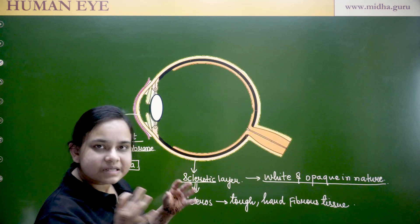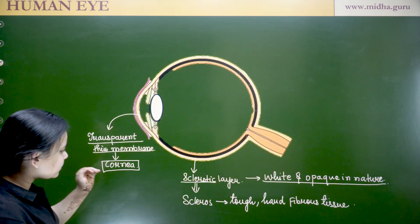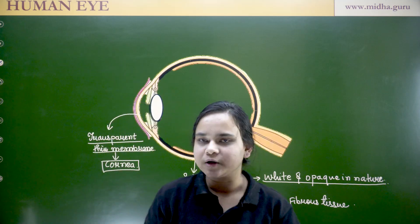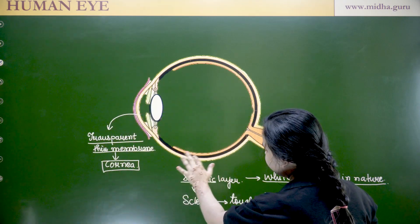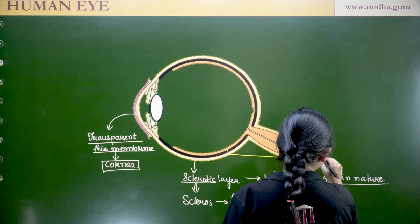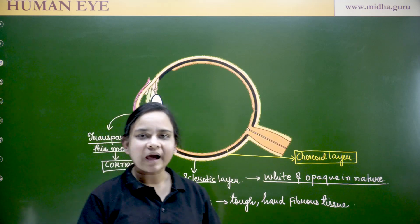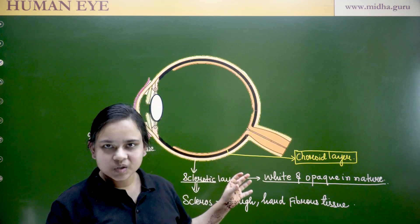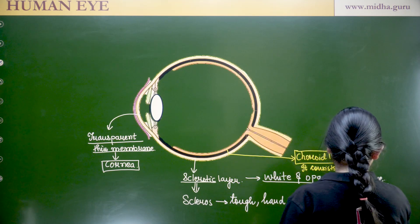So the sclerotic layer, when it extends into the anterior region of the eyeball, becomes a transparent thin membrane which we call the cornea. Next, the second layer is the choroid layer. This layer, represented by black in the diagram, has the exclusive property of containing blood vessels and capillaries. It is therefore called the vascular layer of the human eyeball.